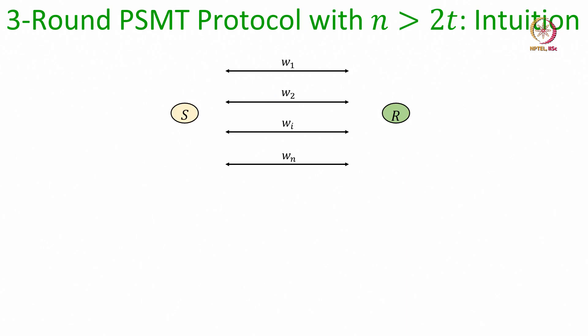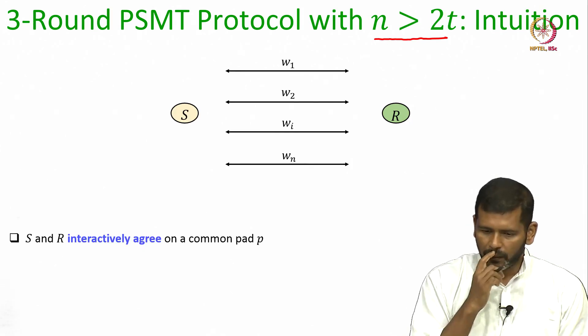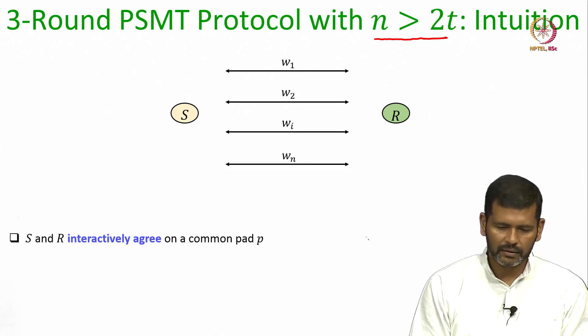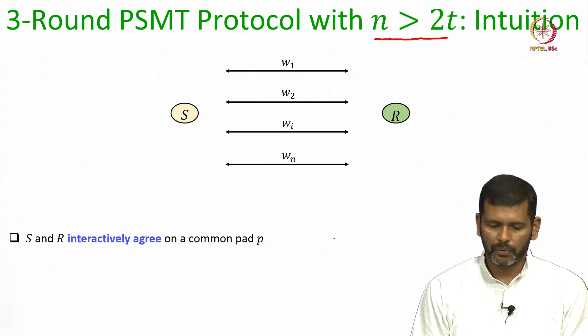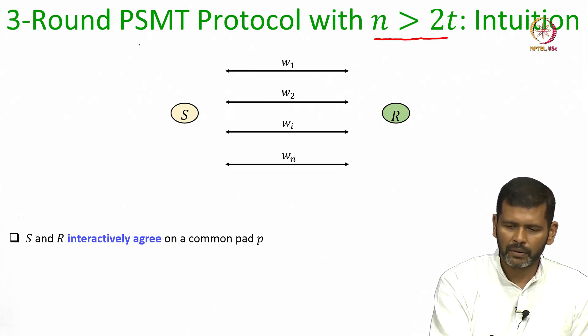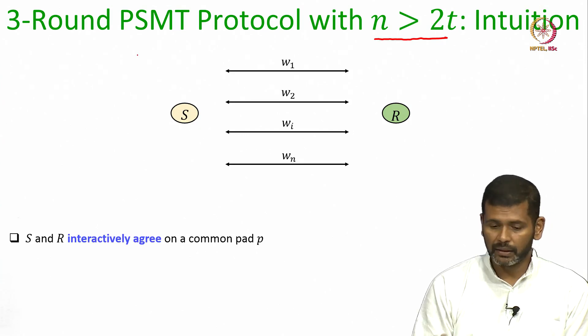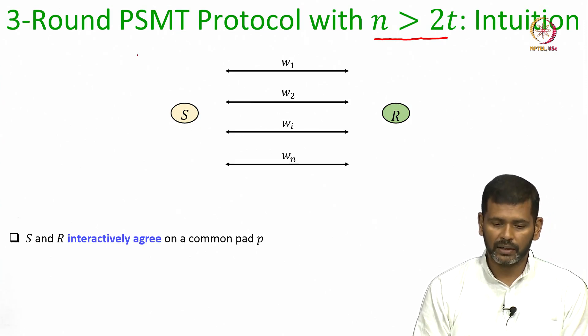The underlying intuition behind the protocol is as follows: imagine you have at least 2t plus 1 bi-directional wires between the sender and the receiver, of which at most t could be Byzantine corrupt. Then what S and R do is run an interactive protocol, and that is allowed because we are now talking about bi-directional wires.